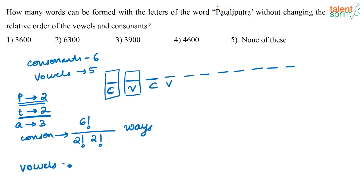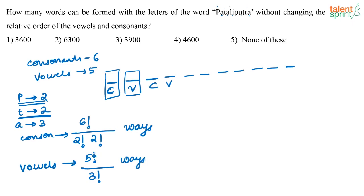Similarly, how many ways can I arrange the vowels? There are totally 5 vowels in 5 positions, and they can be arranged in 5! ways. However, the vowel A is repeating three times, so removing the repetitions, the total number of ways to arrange the vowels is 5! divided by 3!.